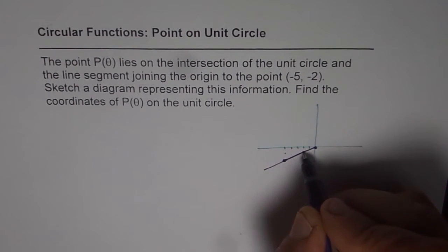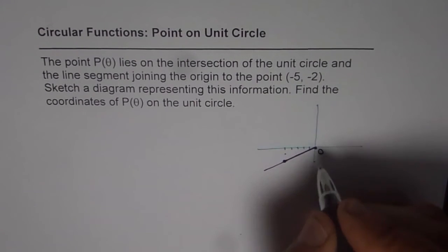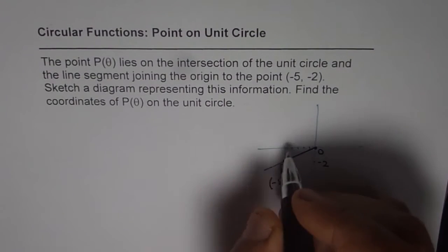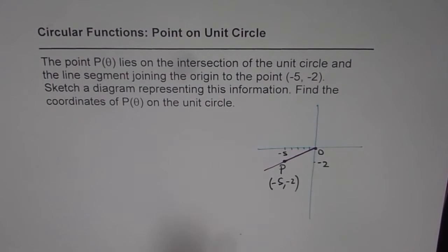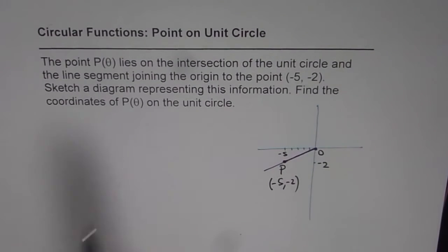So this is the line segment which is O to P and point P is (-5, -2) for us. So this is -2 and that point is -5. Now we need to find the coordinates of P(θ) on a unit circle.